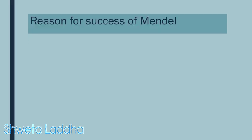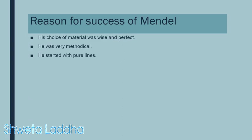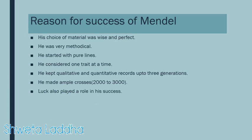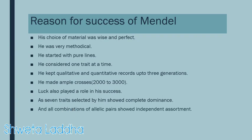Now, what was the reason for Mendel's success? His choice of material was very wise and perfect. He was very methodical — he always started with pure lines, as seen in both monohybrid and dihybrid crosses. He considered only one trait at a time, kept qualitative as well as quantitative records up to three generations, and used his knowledge of mathematics. He made approximately 2000 to 3000 crosses. He was also lucky because all seven traits he selected showed complete dominance, and all combinations of allelic pairs showed independent assortment, proving all three of his laws: law of dominance, law of purity of gametes, and law of independent assortment.